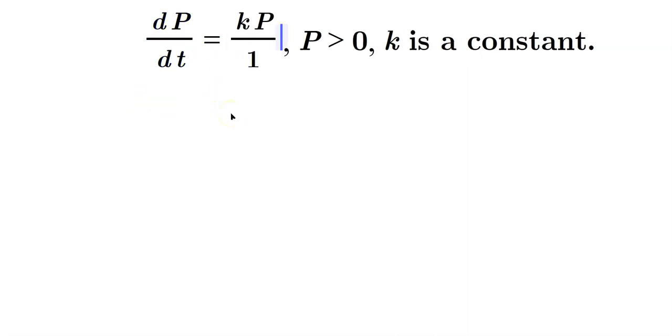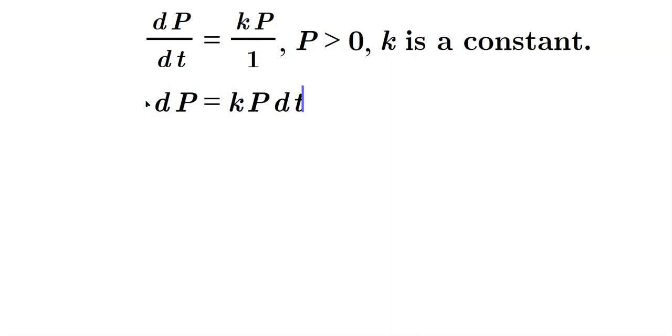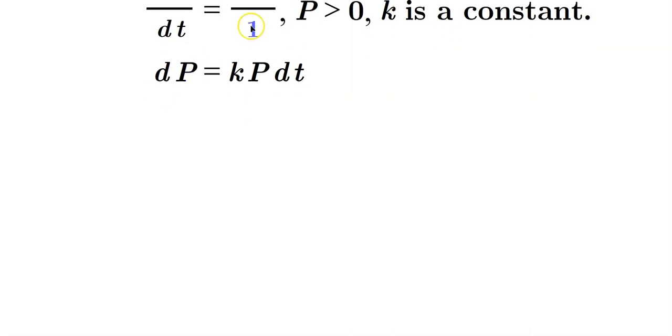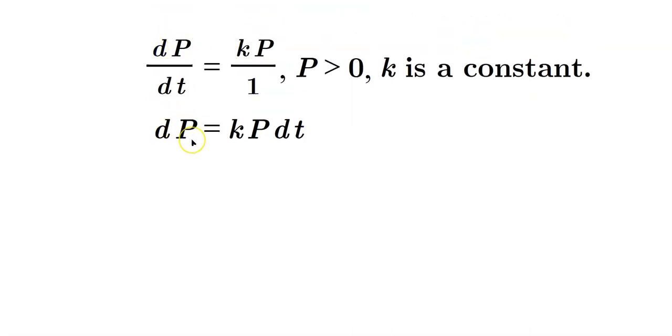First write the kP as kP over 1, then cross multiply. It's a proportion. So dP equals kP dt. This is cross multiplication. The 1 multiplied to the dP doesn't change anything.